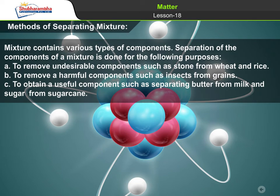Methods of separating mixtures. Mixture contains various types of components. Separation of the components of a mixture is done for the following purposes: A. to remove undesirable components such as stone from wheat and rice; B. to remove a harmful component such as insects from grains; C. to obtain a useful component such as separating butter from milk and sugar from sugar cane.